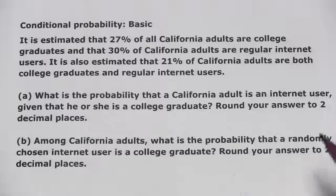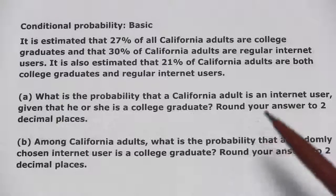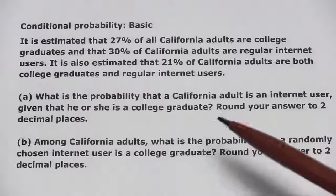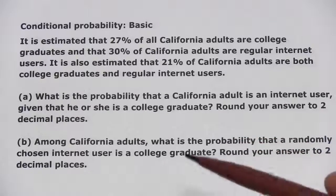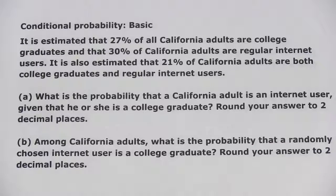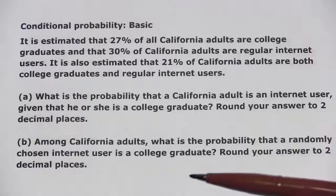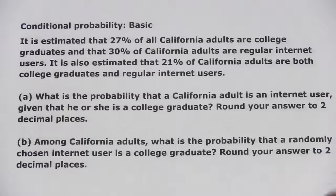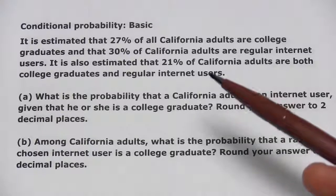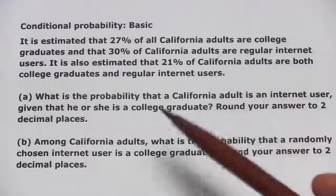In these problems, we're looking at something called conditional probability. In those types of questions, you look at the probability of one thing given some other thing. And there's a particular formula for calculating that.